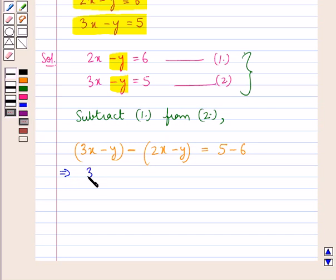So further we get 3x minus y minus 2x plus y is equal to minus 1. Now plus y minus y cancels and we have 3x minus 2x which is x is equal to minus 1. So we get the value of x as minus 1.